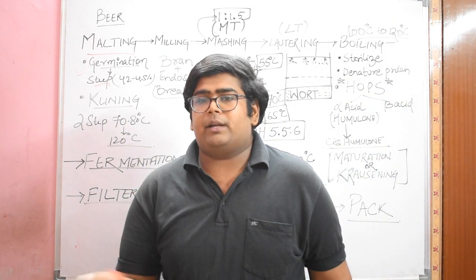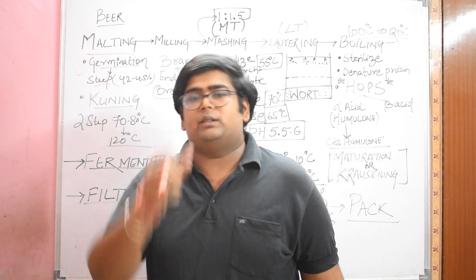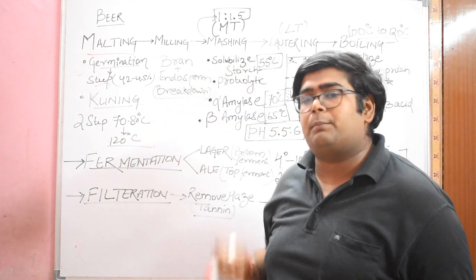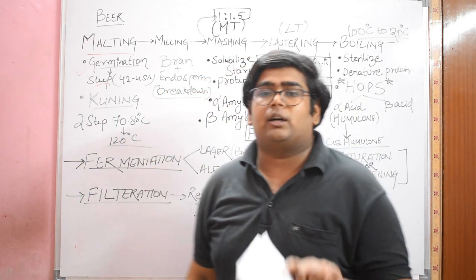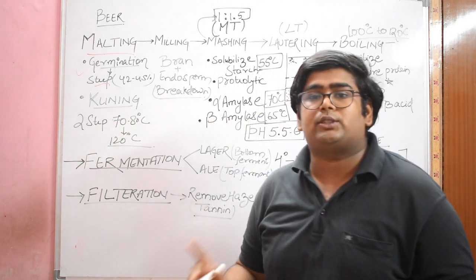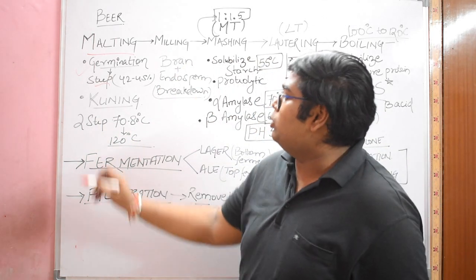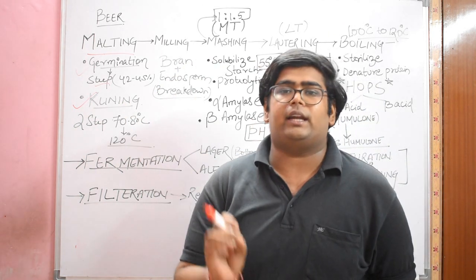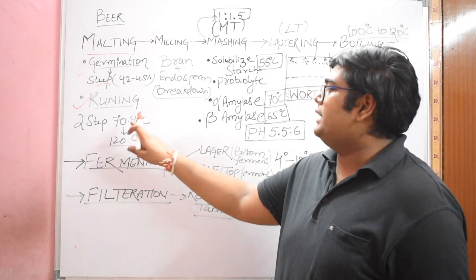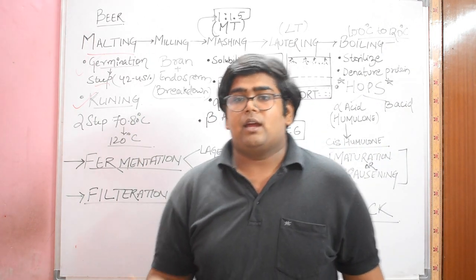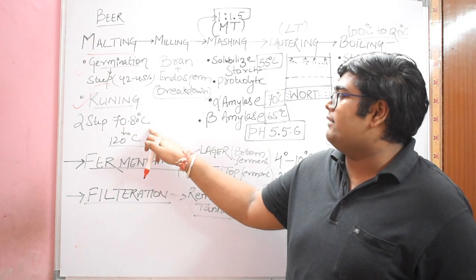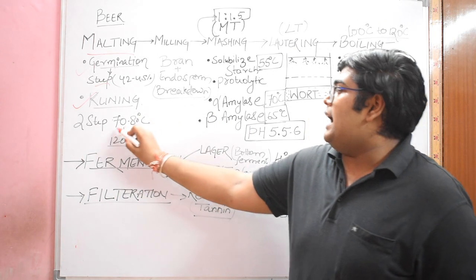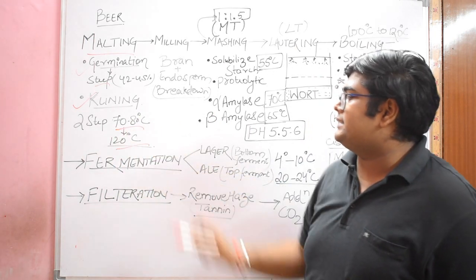During germination, certain enzymes will act on your complex sugars like starches and will convert them into smaller and fermentable sugars. We do not want the grain to become a plant, so we have to stop the germination process at a particular point. To stop the germination process, we do kilning. Kilning is basically heating your germinated grains in two steps: you will heat it till 70 to 80 degrees centigrade and then to 120 degrees centigrade.